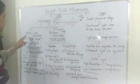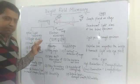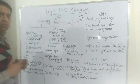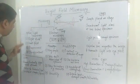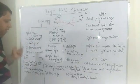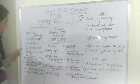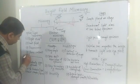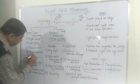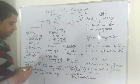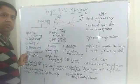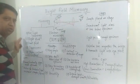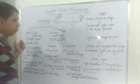Optical or light microscopy is also of different types. The first is bright field microscopy, second is dark field microscopy, third is fluorescent microscopy, fourth is phase contrast microscopy, and the fifth is confocal microscopy. These are the five different kinds of light or optical microscopy.